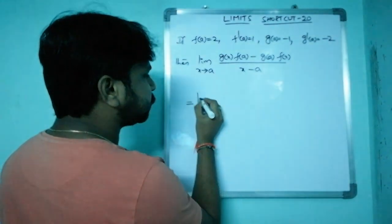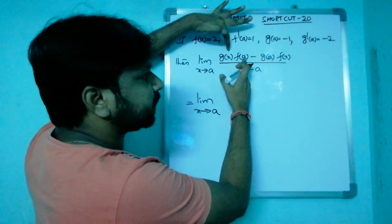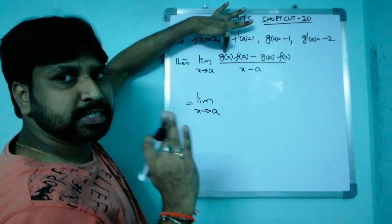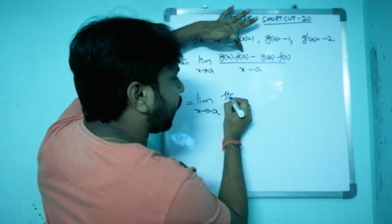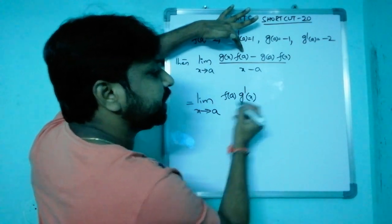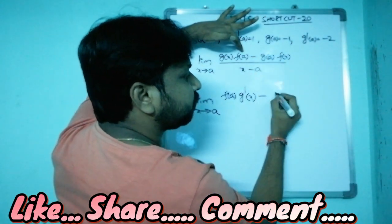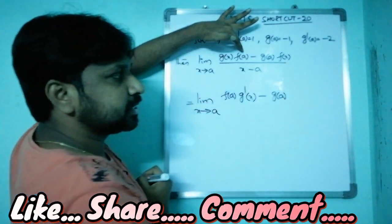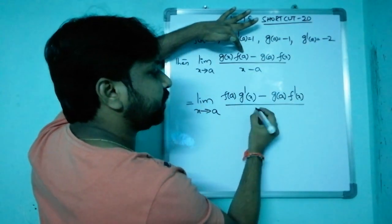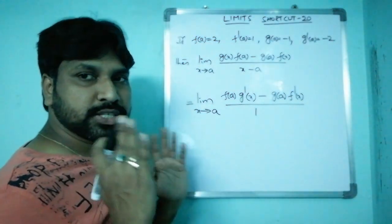So applying L'Hôpital's rule: limit x tends to a. In the numerator, f(a) is a constant, so we keep it and differentiate g(x) to get g'(x). Then g(a) is a constant, and f(x) differentiates to f'(x). The denominator: derivative of x is 1 and derivative of the constant is 0.